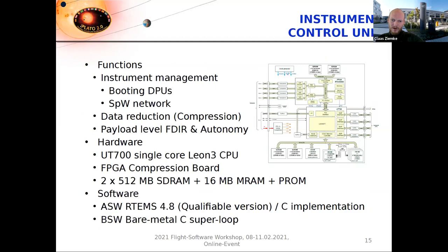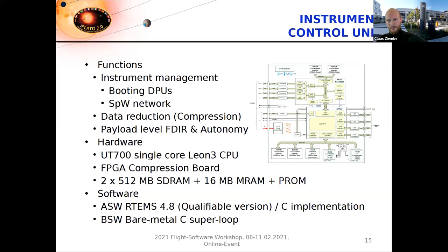The Instrument Control Unit's main function, as the name suggests, is instrument management — for example, booting the DPUs, which have no non-volatile memory and are booted remotely via RMAP (Remote Memory Access Protocol) through SpaceWire from the ICU. The ICU is also responsible for configuring the SpaceWire network, further data reduction (compression), and payload-level FDIR and autonomy functions. It has a UT700 single-core Leon 3 CPU, a dedicated FPGA compression board, two times 512 megabytes SDRAM, 60 megabytes MRAM for non-volatile storage of application software images, and PROM for boot software. The application software is coded in RTEMS 4.8, a pure C implementation, and the boot software is a bare-metal C super loop.